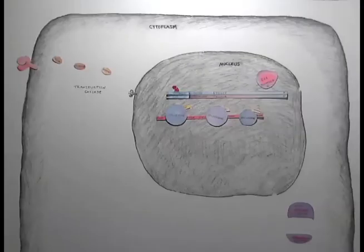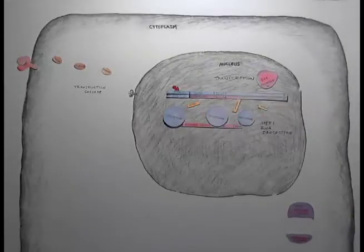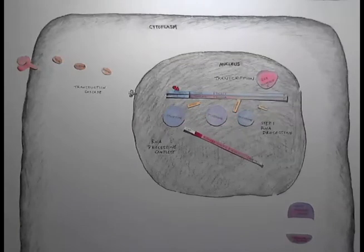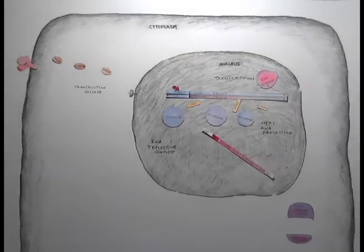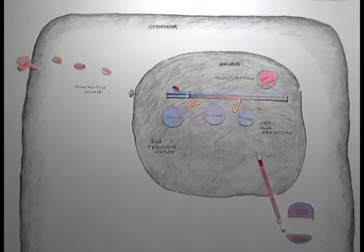Splicosomes bind the pre-mRNA and cut out the introns, which will remain in the nucleus, and paste the exons together. The exons, with a cap and tail added, are now ready to leave the nucleus.